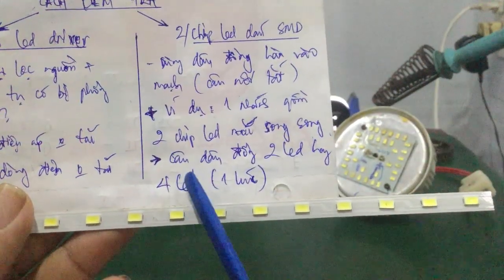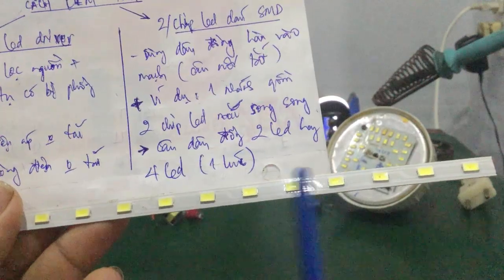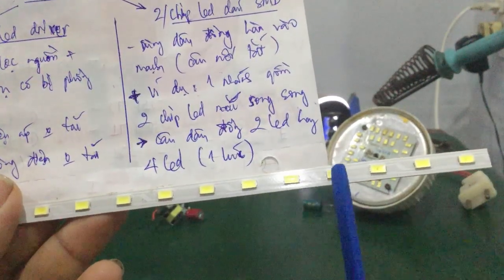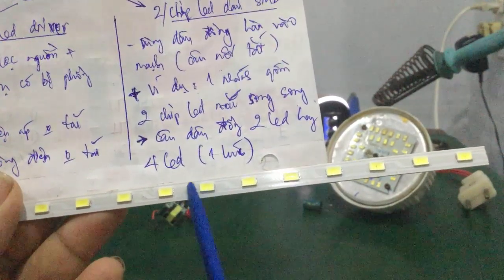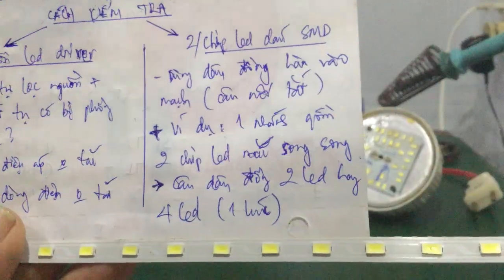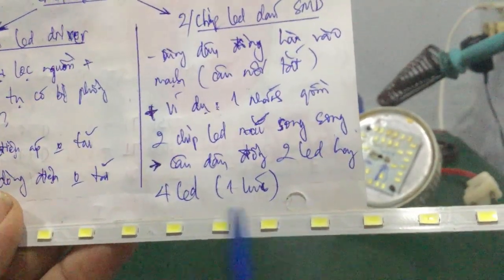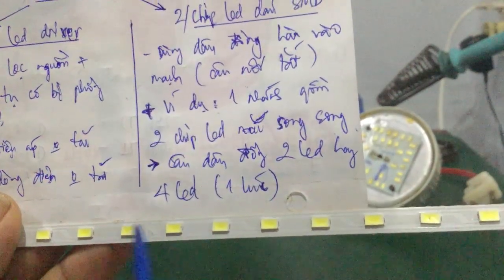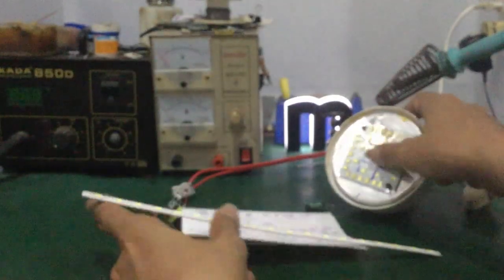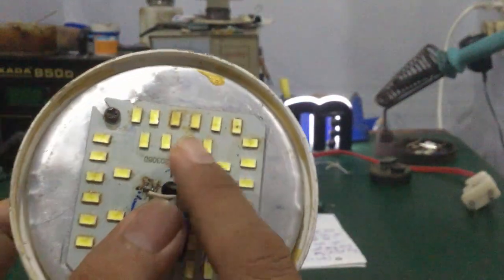Các bạn câu dây đồng — ví dụ hai con chip LED mắc song song với nhau rồi nối tiếp với hai chip LED khác. Các bạn câu hai nhánh — bốn con chip LED. Hoặc đơn giản là các bạn câu một nhánh thôi vì chỉ có hai con chip LED mắc song song. Với LED book thì các bạn cũng làm tương tự. Nó cũng có hai con chip LED mắc song song với nhau rồi nối tiếp.